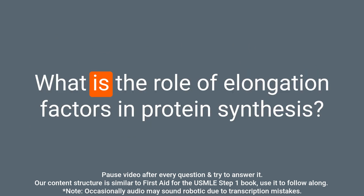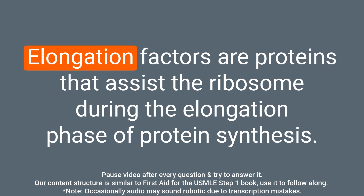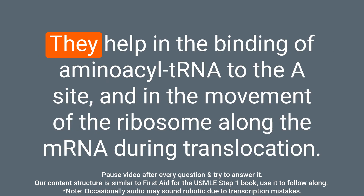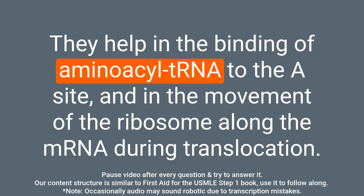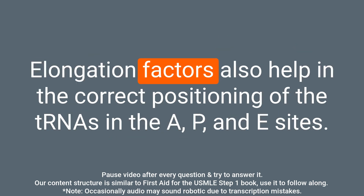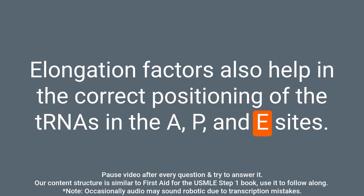Question: What is the role of elongation factors in protein synthesis? Answer: Elongation factors are proteins that assist the ribosome during the elongation phase of protein synthesis. They help in the binding of aminoacyl-tRNA to the A site and in the movement of the ribosome along the mRNA during translocation. Elongation factors also help in the correct positioning of the tRNAs in the A, P, and E sites.